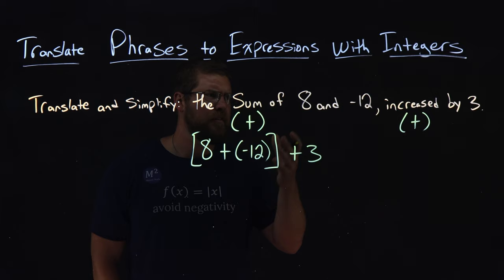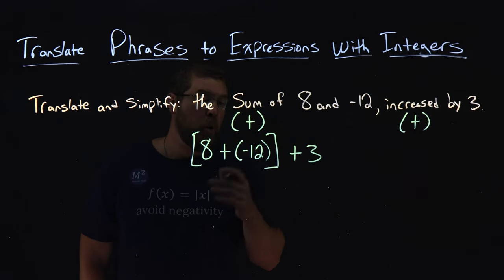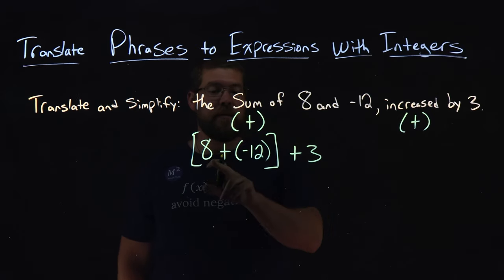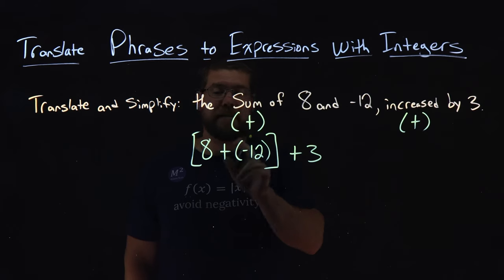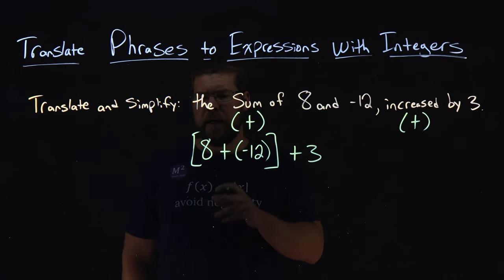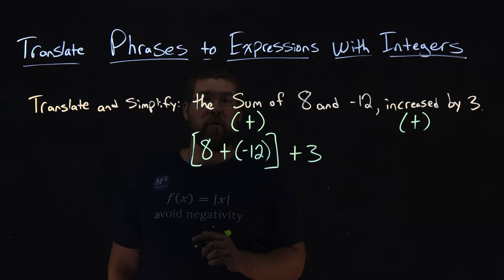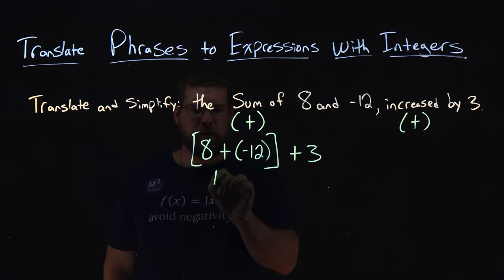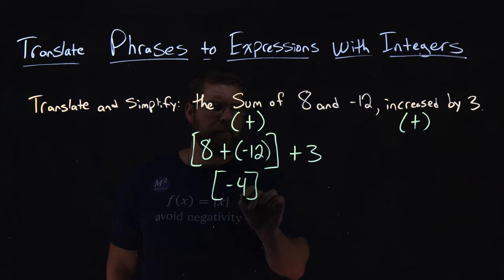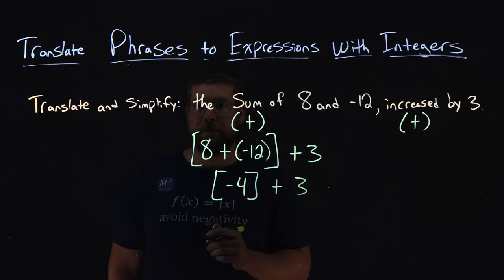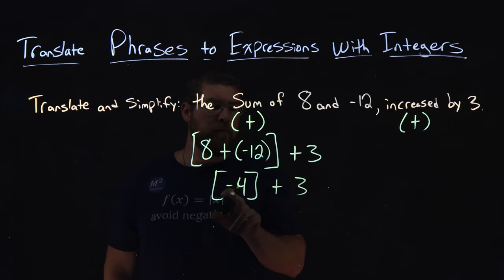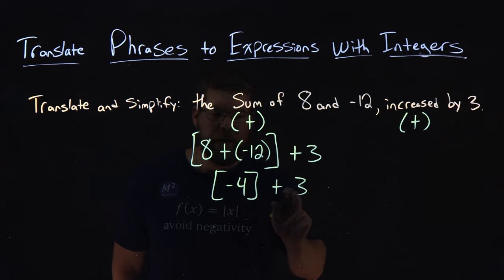So now we have this expression written out. Let's go simplify it. Order of operation tells us that 8 and negative 12 have to be first because it's inside of our brackets. 8 plus a negative 12 here, 8 and negative 12 is a negative 4. So we have a negative 4 right here, plus a 3. Then from there, negative 4 gets added to the 3, and negative 4 plus 3 is a negative 1.